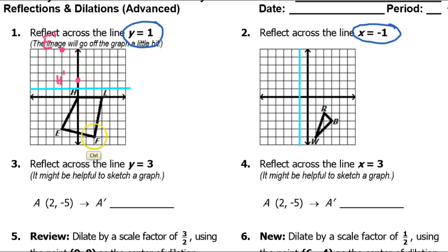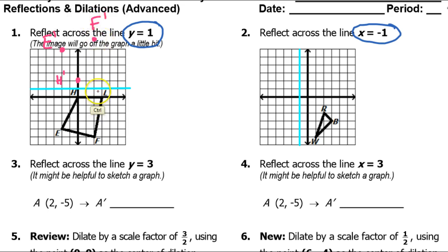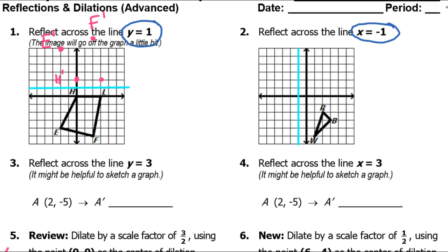Looking at point f, this is 6 units below the blue line. It's so hard to keep yourself from counting from the x-axis because that's what we're used to, so be really careful. It's 6 units from the blue line, so I need to go 6 units above the blue line, which is going to go a little off the chart, but that's okay — so this is f-prime. And then point l is 1 unit below the blue line, so I'll go 1 unit above it. Now I'll just connect those dots. There is your reflection across the line y equals 1.